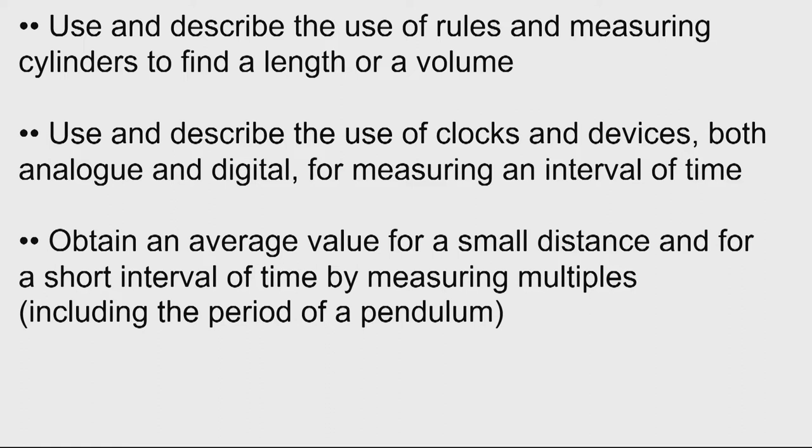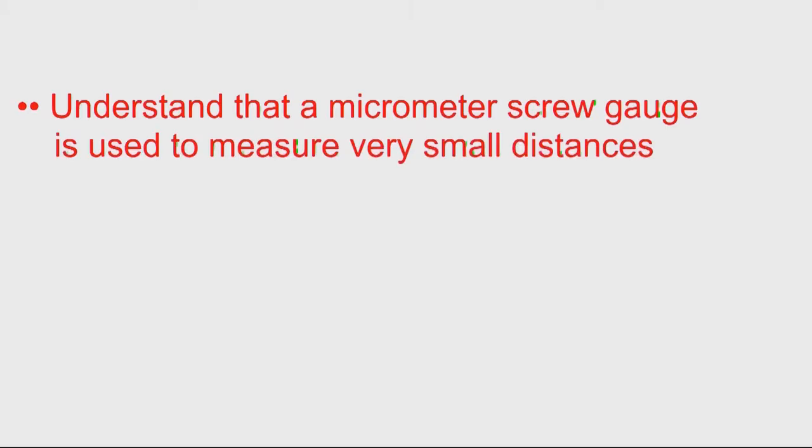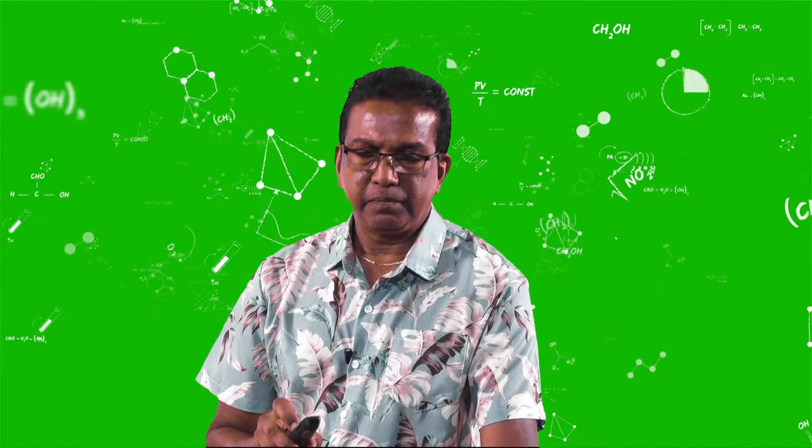You will have to be using and describing your use of rulers and measuring cylinders to find length and volume. You will be using clocks and devices, analog and digital, for measuring intervals of time. You will have to be obtaining averages for small distances and short intervals of time. And for the extended candidates, you will have to know how to use a micrometer.